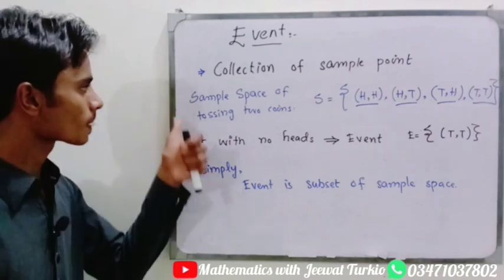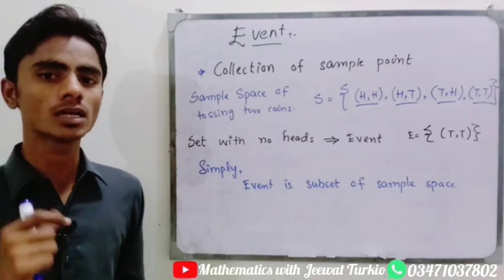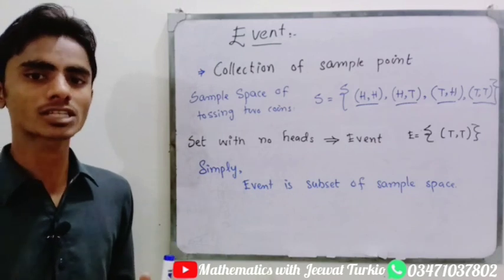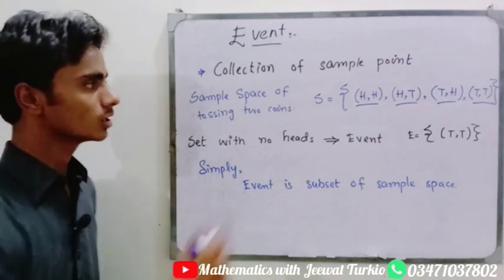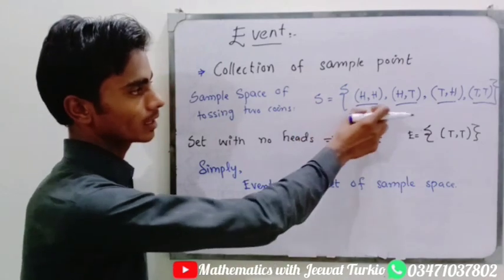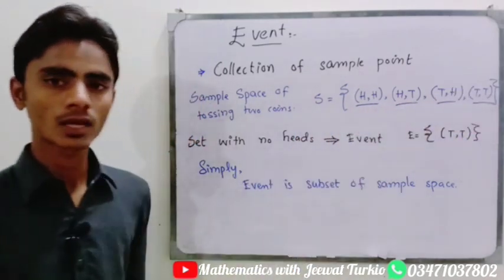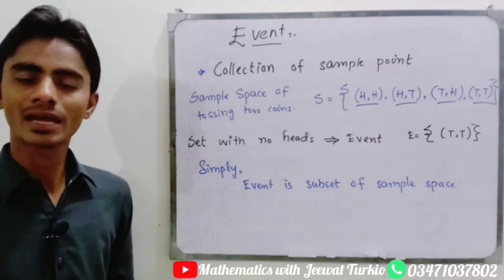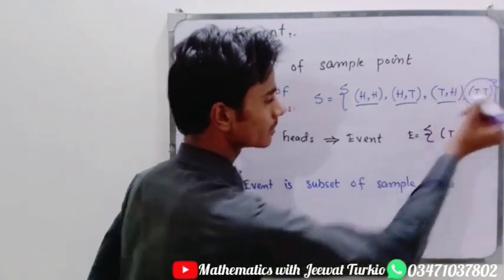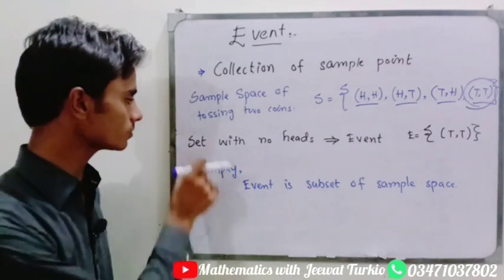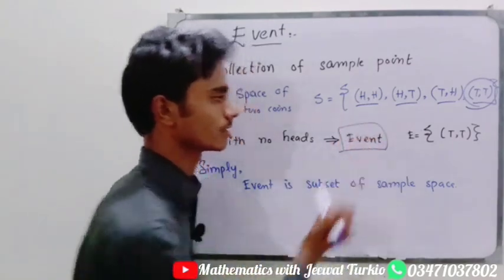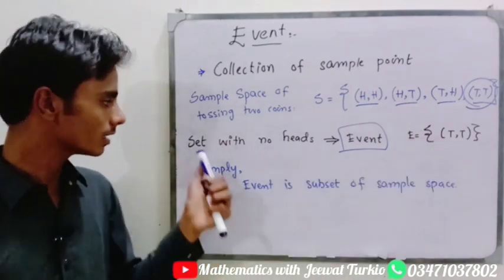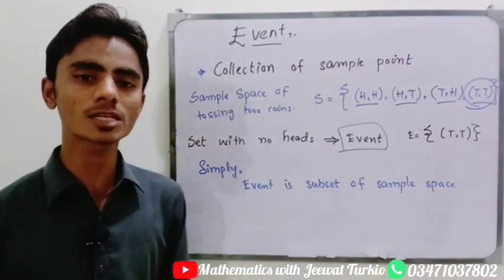Let's take an example: the sample space of tossing two coins. The sample space is the collection of all experimental outcomes: S = {HH, HT, TH, TT}. Now if we define a specific event — for example, the set with no heads — that event is simply {TT}. So we can say that an event is a subset of the sample space.